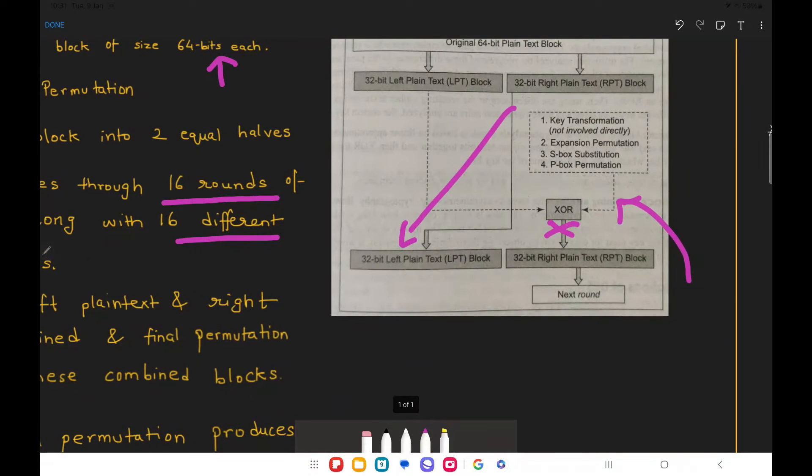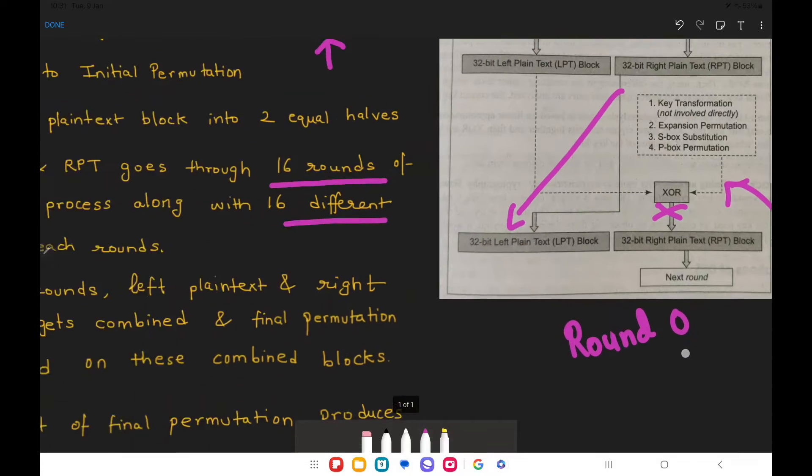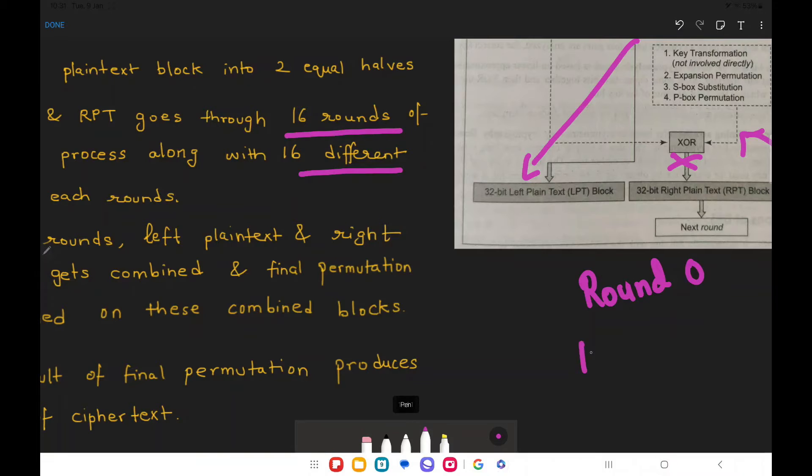So all of these efforts that we have seen so far that corresponds to round number 0. So this entire process is going to happen for 15 more times. So in short it will go till round number 15.